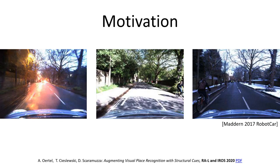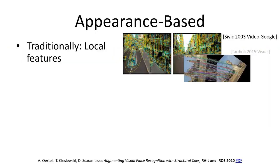To achieve a place recognition system that can cope with such drastic changes in appearance, we need to find invariances that allow us to match images taken at the same location while not matching images from different locations. Traditionally, image matching and place recognition have been based on local visual features in the images, where whether two images match or not would be derived from an aggregate of feature similarities, and the invariants for challenging conditions would need to be captured in the feature descriptors.